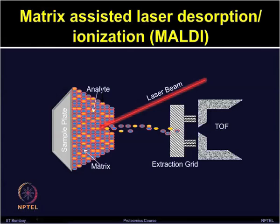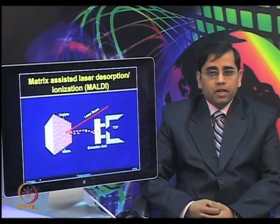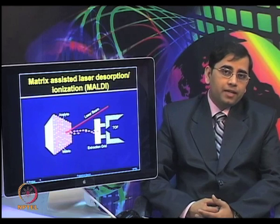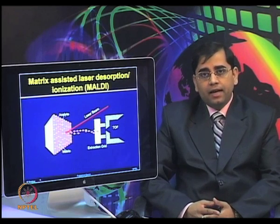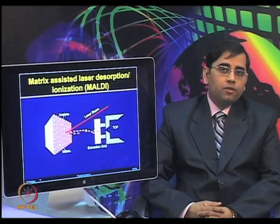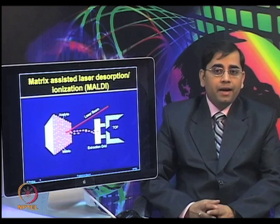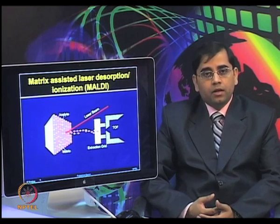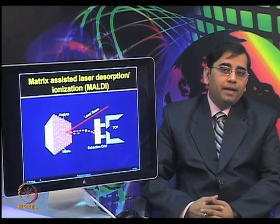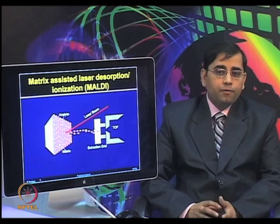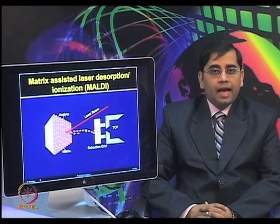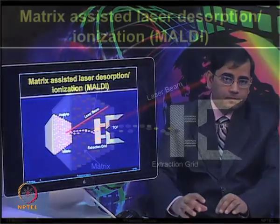In matrix-assisted laser desorption ionization (MALDI), the analyte or proteins of interest are mixed with a matrix, which is usually an aromatic compound. Various types of matrices are available; for example, 2,5-dihydroxybenzoic acid and sinapic acid, among several other choices. Once a matrix is selected, the analyte and matrix are dissolved in an organic solvent and then placed on a metallic target plate. The slide shows how the analyte and matrix are placed together on the sample plate.